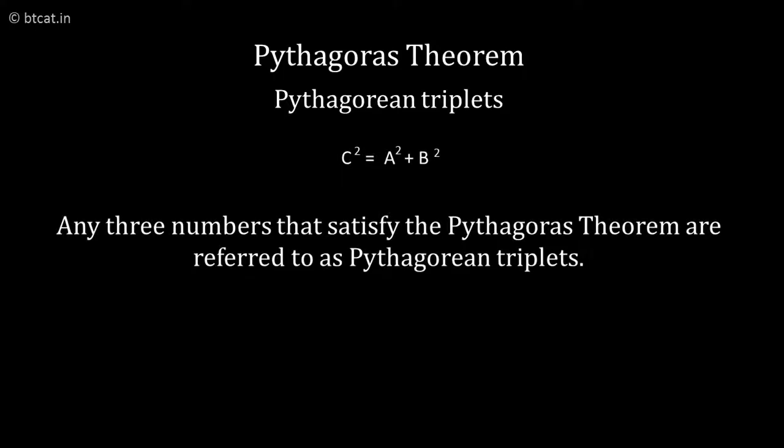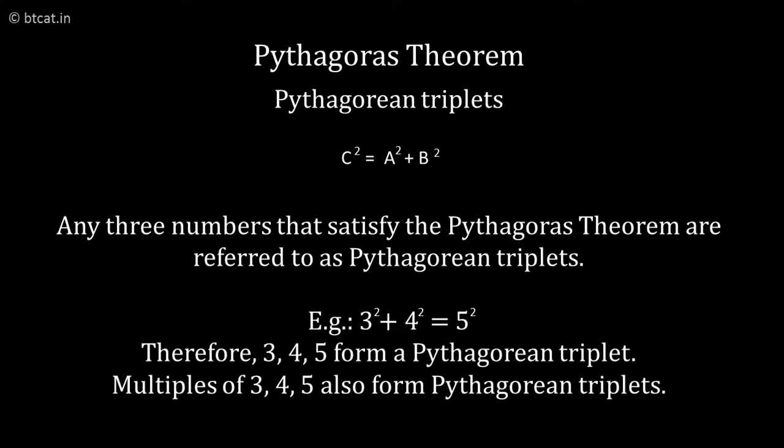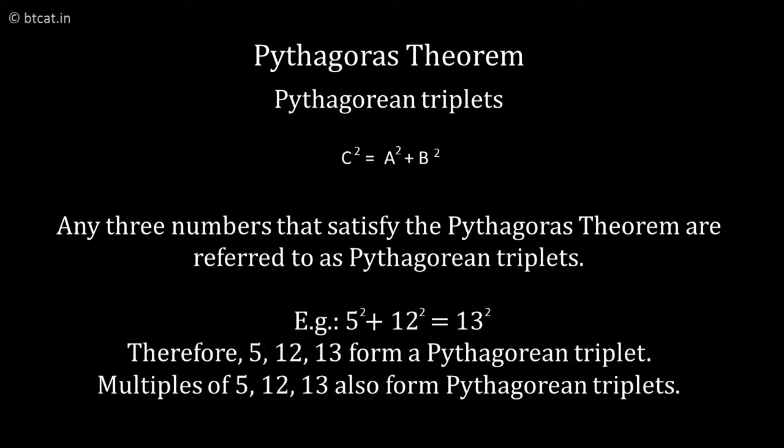You can have 3, 4, 5, and if you check, 3² + 4² = 5². 9 + 16 = 25. Also 5, 12 and 13: 5² is 25, 12² is 144, and 13² is 169. So 25 + 144 = 169. So 3, 4, 5 and all multiples of 3, 4, 5; 5, 12, 13; 8, 15, 17 - these are all examples of triplets.